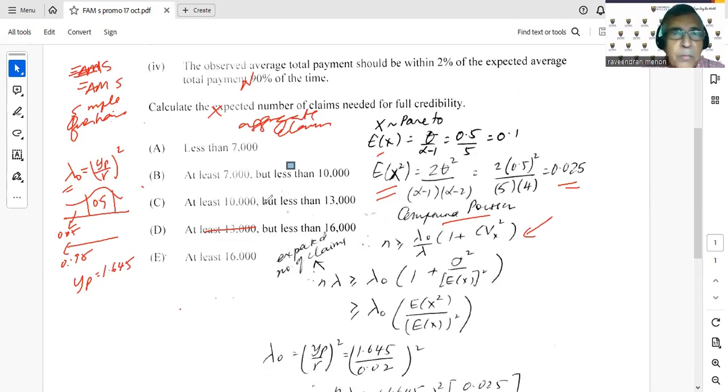Because they want us to find the expected number of claims needed for full credibility, we know straight away they want n*lambda. So we start here, and then bring lambda across.